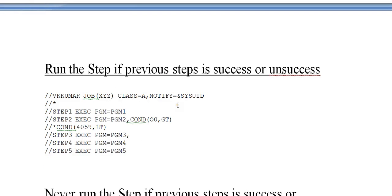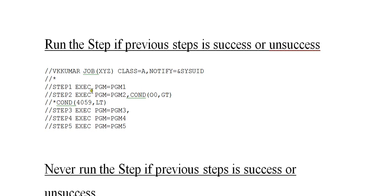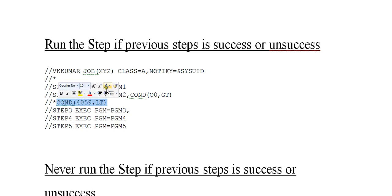The next scenario is: run the step if the previous step is successful or unsuccessful. You have five steps. In step two, you can code COND as (0, 0, GT) — since return codes start from zero. Or you can code another condition like COND equal to (4095, LT). This way you can execute this particular step regardless of the previous step's outcome. This covers the scenario of running a step whether the previous step succeeded or failed.